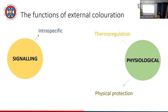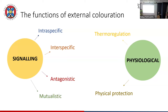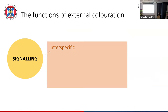In terms of the signalling functions, we have intraspecific and interspecific functions — signals between individuals of the same species, and signalling between individuals of different species. These can be antagonistic or mutualistic — basically good and bad — so they can be to the benefit of an individual or to the benefit of both. I'm going to zero in on these between-species functions.